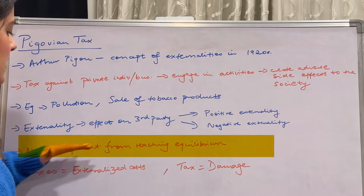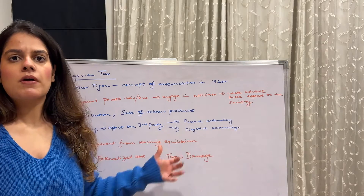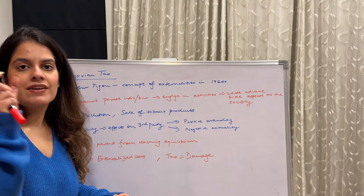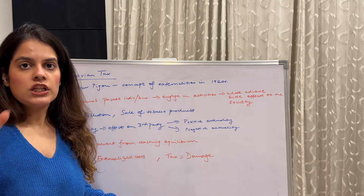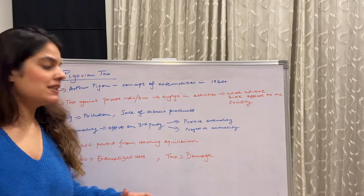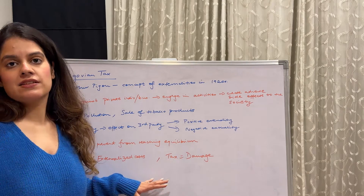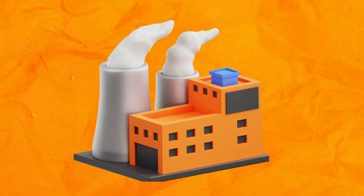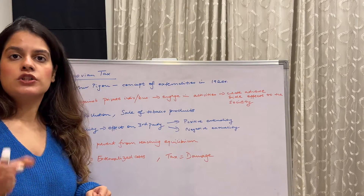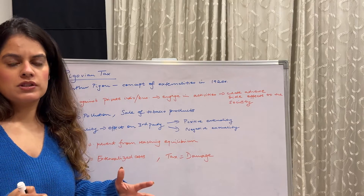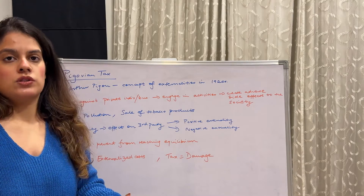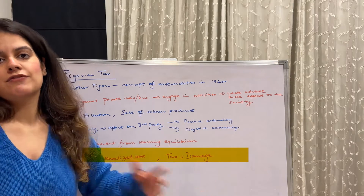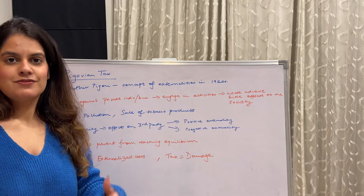Negative externalities prevent the market from reaching equilibrium — we'll be discussing this graphically in future videos. Because there is a negative externality, we can't reach equilibrium, and that is why this tax is implemented — so that cost is externalized. Whatever damage the factory is creating has not been included in the production cost of whatever product they are producing, so this is an additional cost, and the tax is equal to the damage that factory is creating.